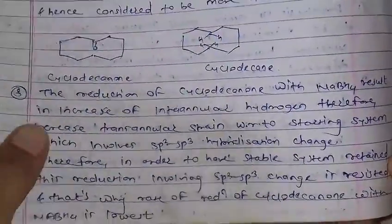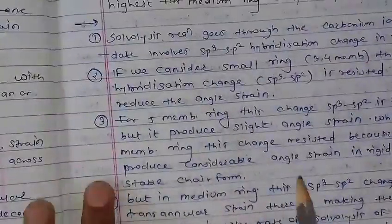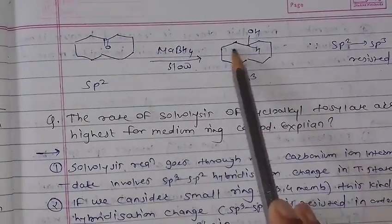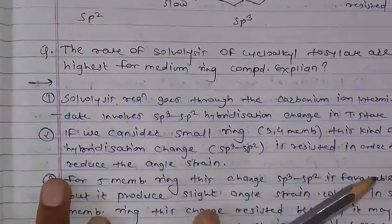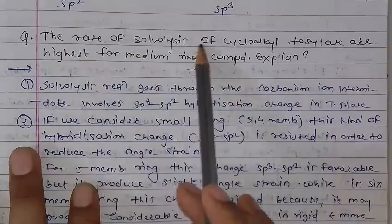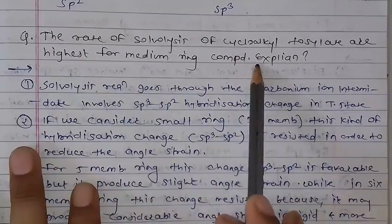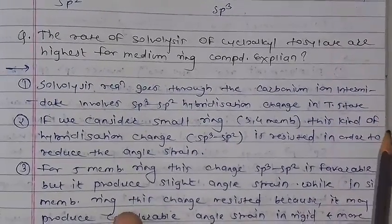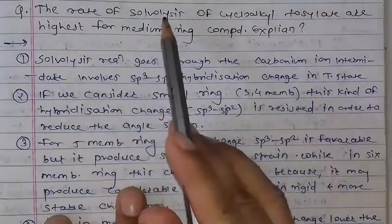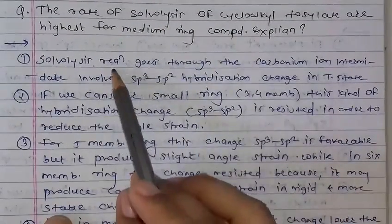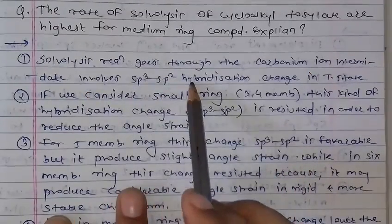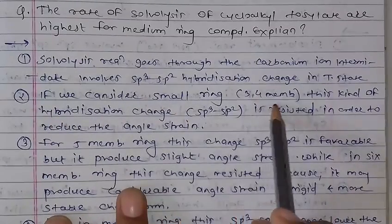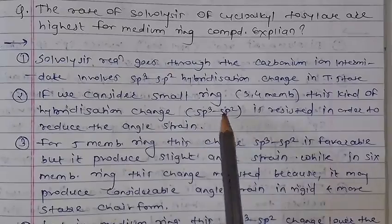The next point: under acid conditions, the rate of solvolysis of cycloalkyl systems in the medium ring is the highest. The result is similar to a hybridization change in the sp2 to sp3 transition state. The second condition considers small rings — the 3 or 4 membered ring — where the hybridization change from sp3 to sp2 increases the transition state angle strain.